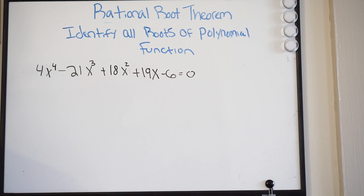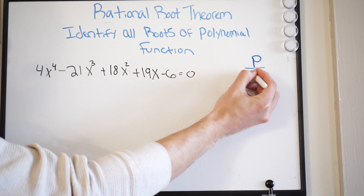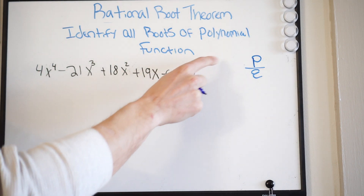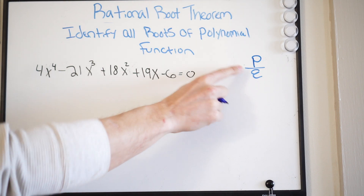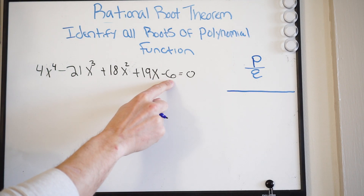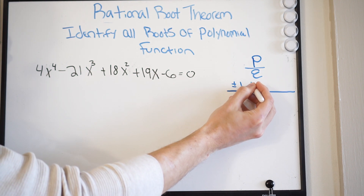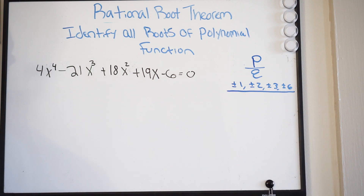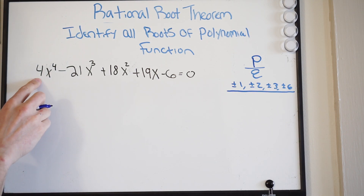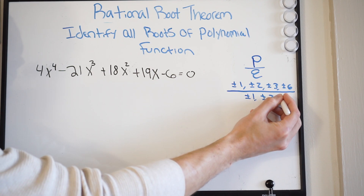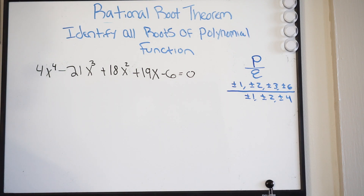So the rational root theorem — what is that? Well, that's simply going to be P over Q, where P is my constant term and Q is my leading coefficient. So in this case, my constant term is negative 6 and my leading coefficient is 4. And all we have to do now is write out the factors of both of them.